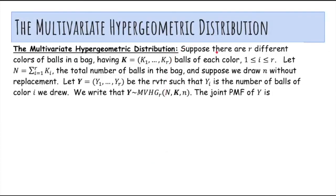So in general, if you have r different colors of balls in the bag, and you have big K balls of each color, or sorry, big K_i balls of each color, then if you let big N be the total number of balls in the bag, and you suppose you draw little n without replacement, then we let Y be the random vector such that Y_i is the number of balls of the color i that we drew.